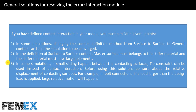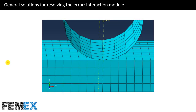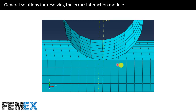For example, in bolt connections, if a load larger than the design load is applied, large relative motion will occur. This is a picture of a bending test simulation showing the test specimen and roller. The roller is usually defined as a rigid part, making it stiffer than the specimen, so it must be the master surface in surface-to-surface contact. Therefore, larger elements must be defined on the roller, as shown here.